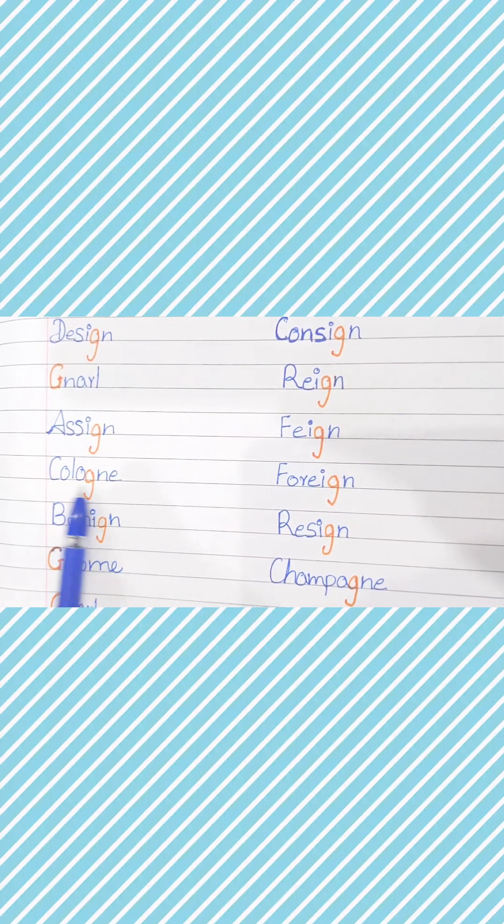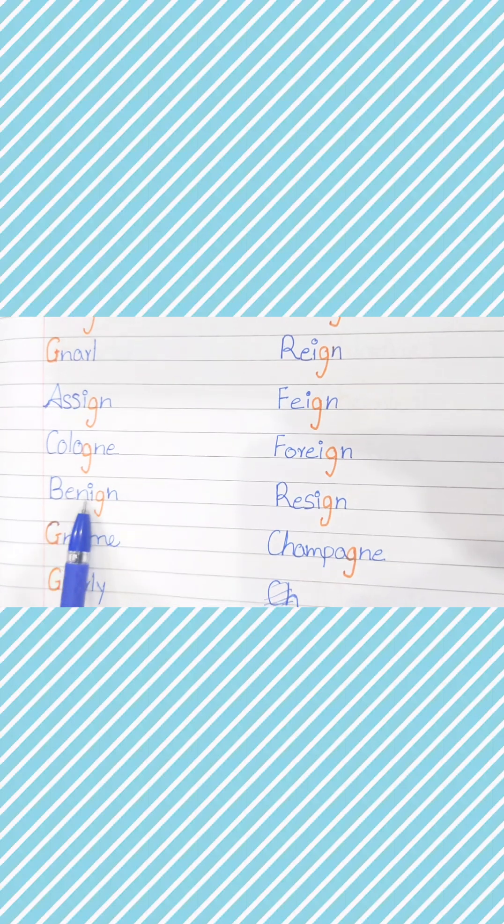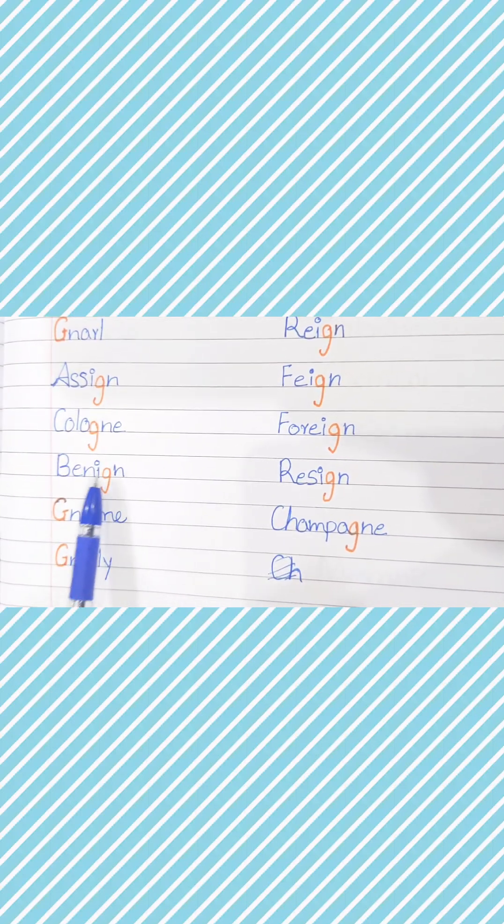Next, design - G is silent. Next, gnaw - G is silent. Next, assign - yes, G is silent because it is before N.